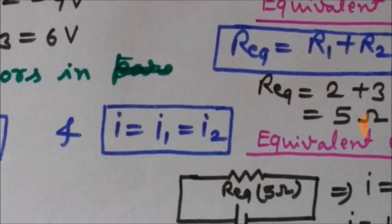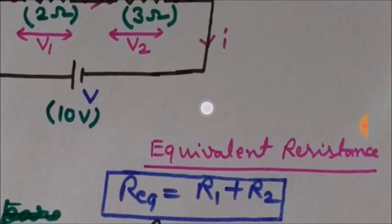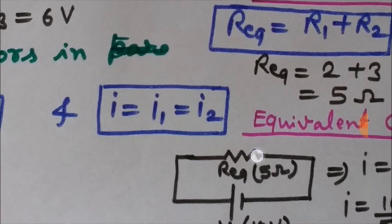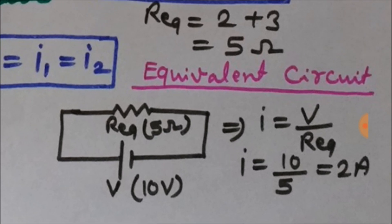The current is the same through each component. If I1 and I2 are the currents flowing through R1 and R2, they are equal to each other and equal to the net current I. You can also see the equivalent circuit: 2 plus 3 ohm gives 5 ohm, and with 10 volts, I equals 10 divided by 5 equals 2 amperes.